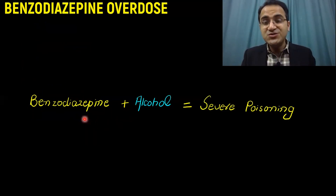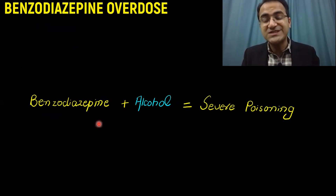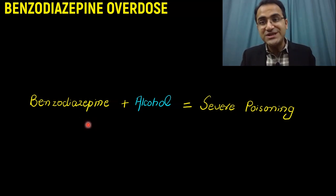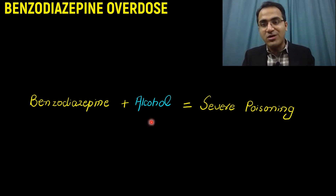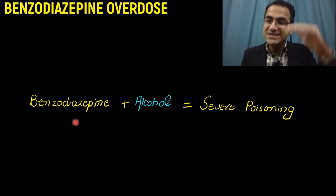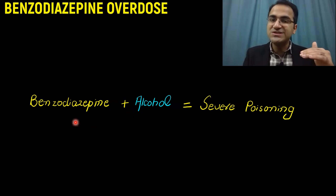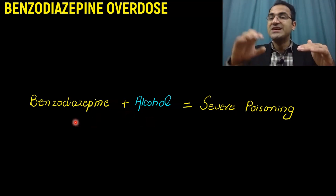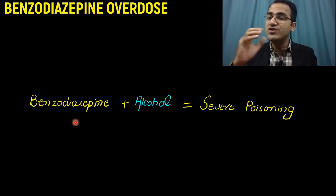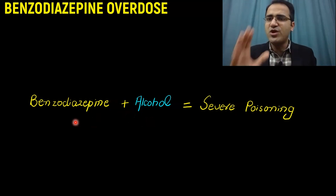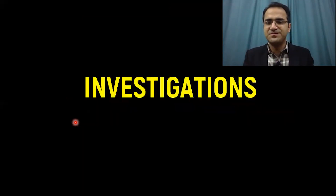Remember that benzodiazepine overdose effects are potentiated when taken with alcohol. Because benzodiazepine is a CNS depressant and alcohol is also a CNS depressant, a combination of the two results in severe poisoning.